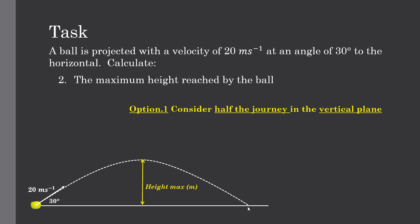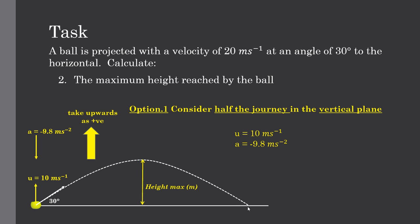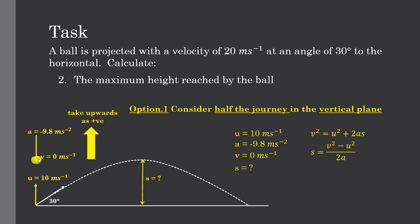The second part of the question is to work out the maximum height reached by the ball. Option one: consider half the journey in the vertical plane. Initial vertical velocity is 10m per second positive, opposing acceleration is negative 9.8m per second squared. At the peak of vertical displacement, the final velocity is zero. Using v² = u² + 2as, transposed for s, substituting our values in, we get a maximum displacement of 5.1m — the maximum height of the projection.